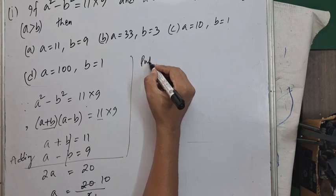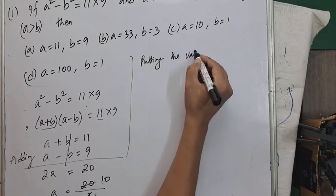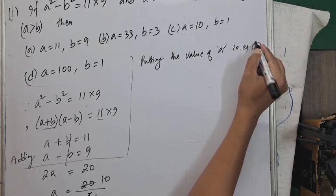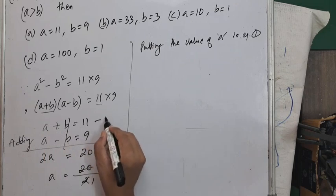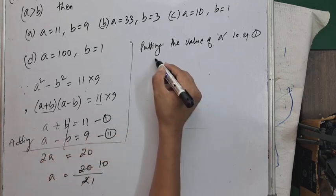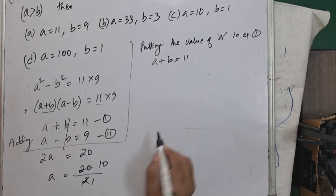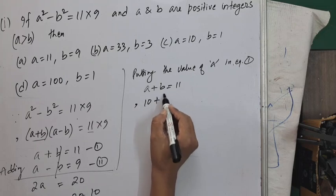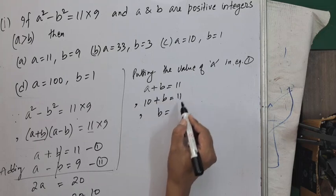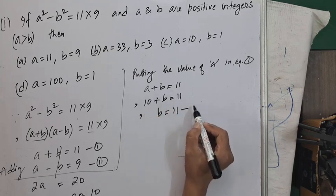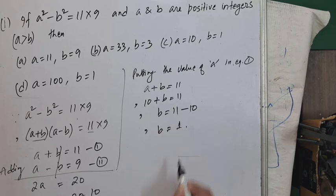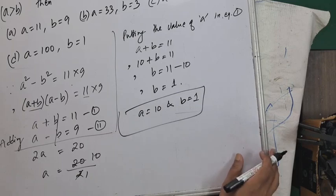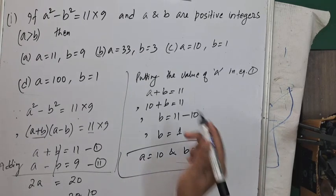Putting a = 10 into equation 1: a + b = 11 becomes 10 + b = 11, so b = 11 - 10 = 1. Therefore a = 10 and b = 1, so option C is the correct answer.